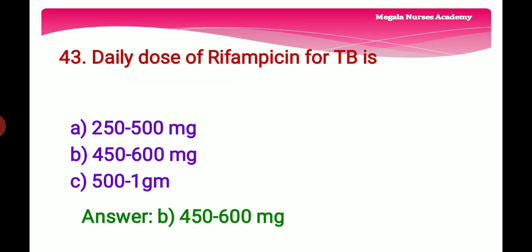Forty-third question: The daily dosage of Rifampicin for TB — Option A: 250 to 500 mg, Option B: 450 to 600 mg, Option C: 500 mg to 1 g. The right answer is Option B, 450 to 600 mg, because the adult dose of Rifampicin for TB is 450 to 600 mg twice daily.